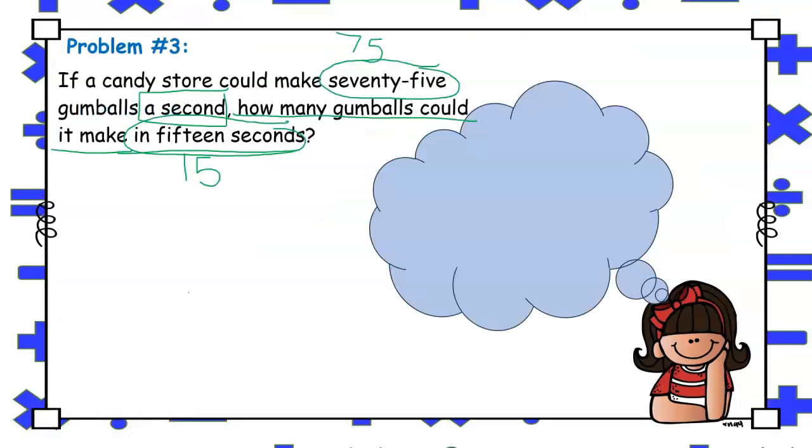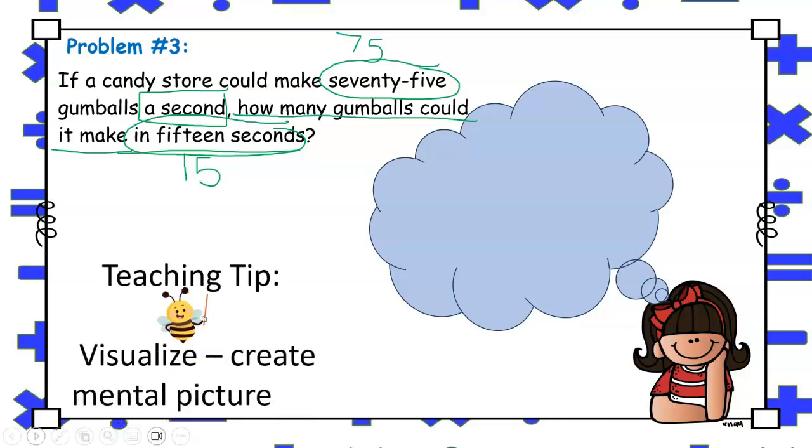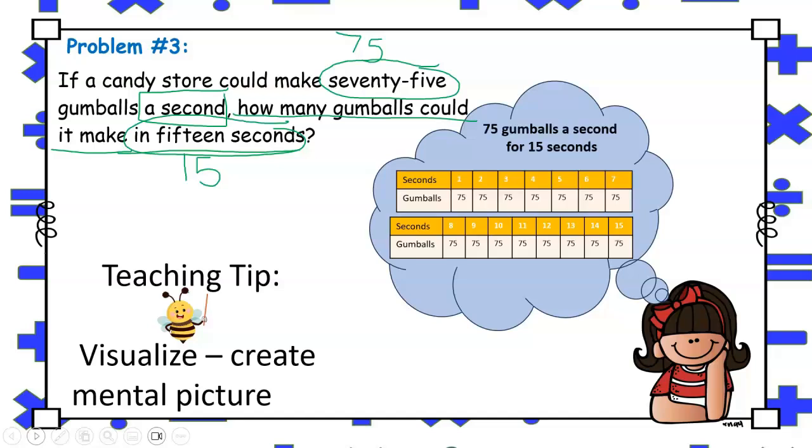Taking a second look at the word problem helps students to understand that not all word problems will have commonly used signal words that will clearly point to an operation that will be used. However, they can still visualize what is occurring by creating a mental picture. Thinking about the part where it says that a store can make 75 gumballs a second, we can possibly imagine it looking something like this.